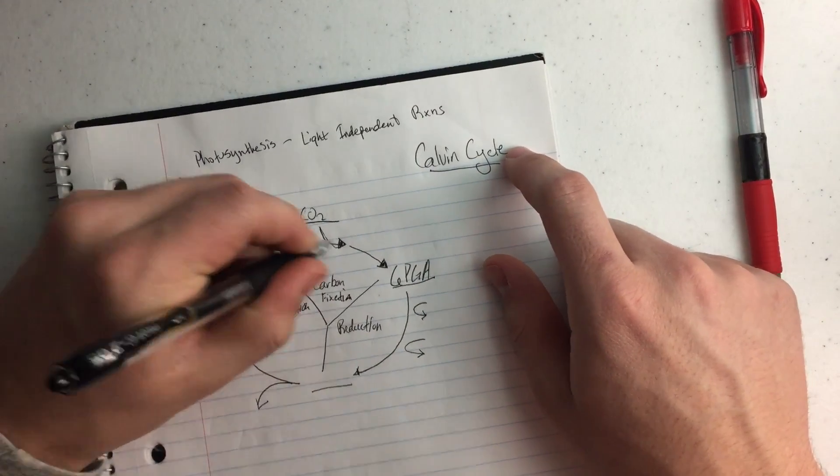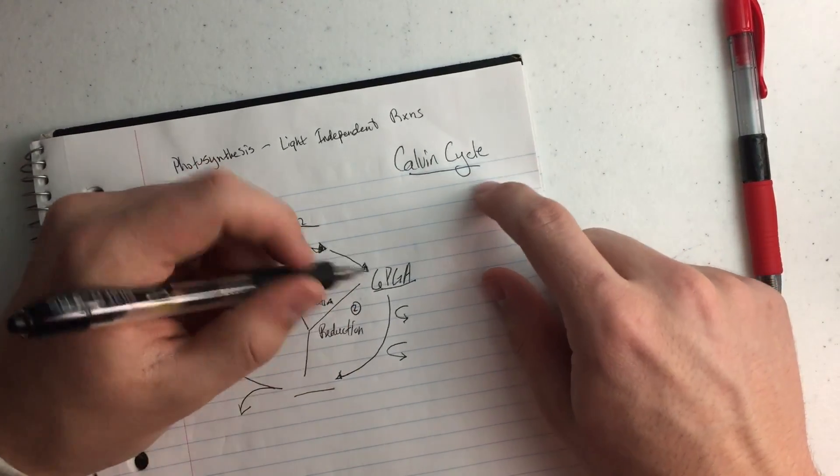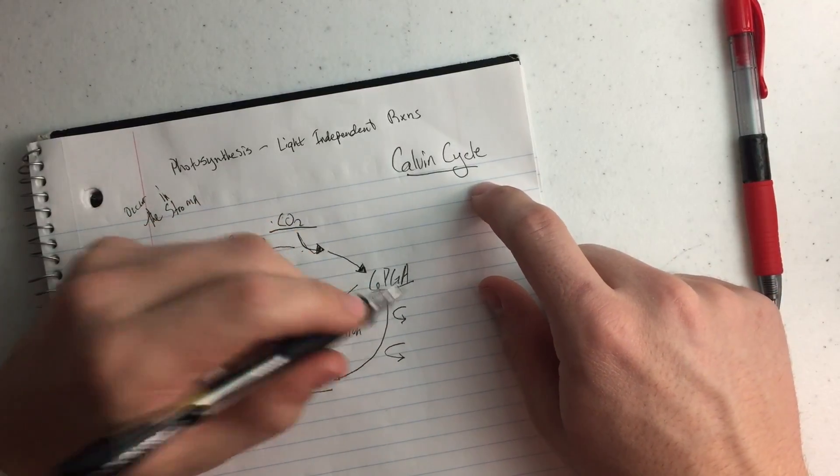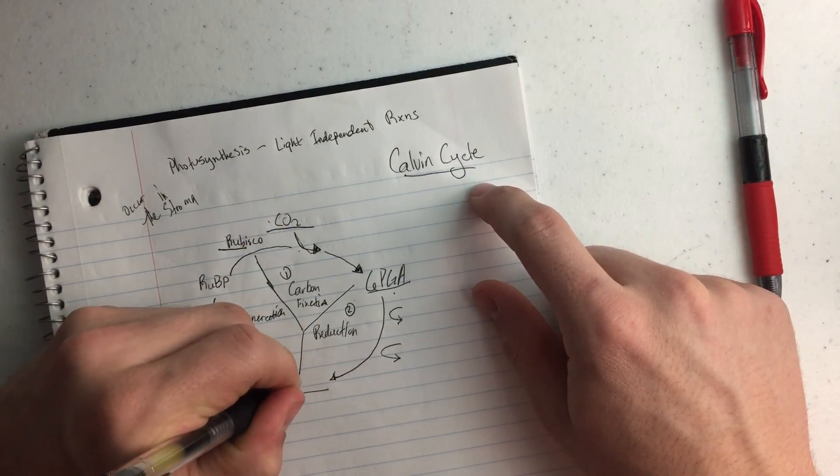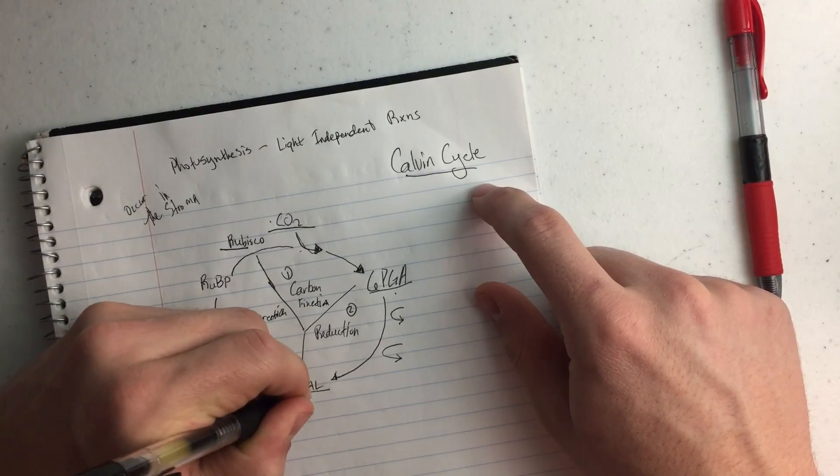Then step 2, it's called reduction, and so PGA is going to get turned into PGAL, also called G3P.